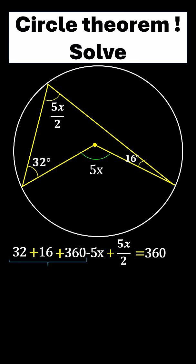Now collecting like terms, we get 408 minus the 5x plus the 5x divided by 2 equal to 360.